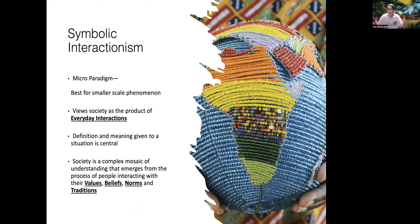Lastly, the symbolic interactionist view — I'm personally a big interactionist. It's a micro paradigm, best for smaller-scale phenomena. Society is viewed as a product of everyday interactions: how we present ourselves in everyday life, why symbols matter. The definition and meaning given to a situation is central. How we understand situations is based on our socialization and cultural values. Society is a complex mosaic of understanding that emerges from people interacting with their values, beliefs, norms, and traditions — how we were raised and socialized plays into our perception of reality.